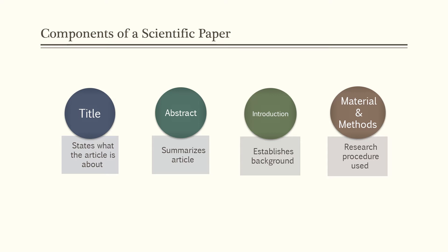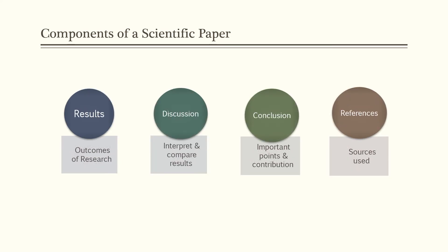Once you have determined your research method and design and gotten all the appropriate permissions, you can start to lay out your paper. The major components of a scientific paper include: the title, which states what the article is about but should not include your conclusions; the abstract, which summarizes the article; the background or introduction, which establishes context; materials and methods, which outlines the research procedure and materials used; the results section, which explains the outcomes; the discussion, which interprets and compares results to similar research; the conclusion, which includes important points and the contribution to the overall body of knowledge; and references, listing any sources used.